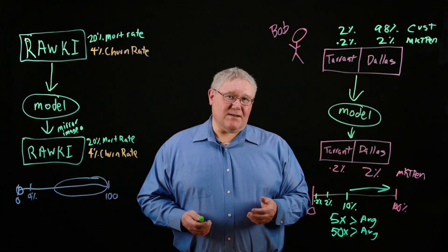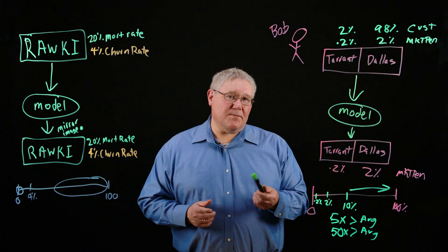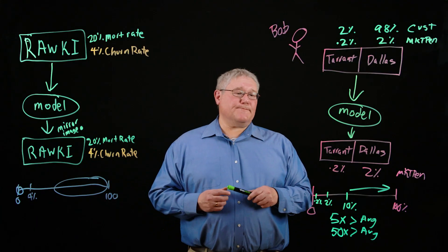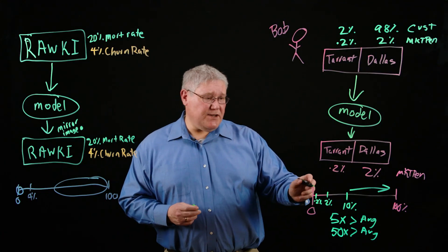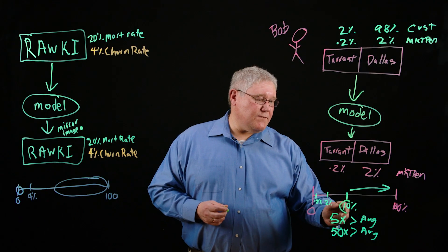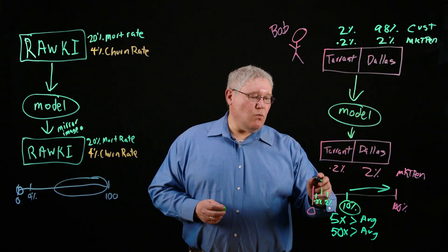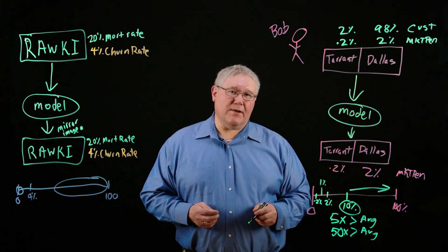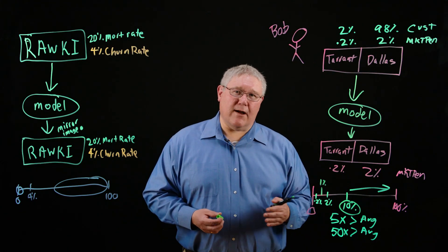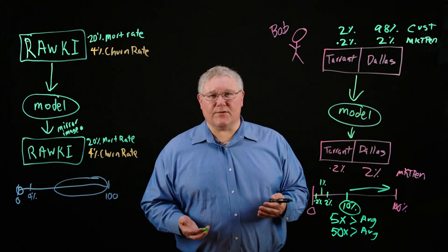So how do you fix this? You can't really fix it per se, but there are some things you can do to mitigate it. One thing you can do is set a different threshold. In this case, Bob may set a threshold of 10% for people in Dallas County, but use 1% for people in Tarrant County, so each group has the same kind of hurdle to climb — that same 5x ratio, since 1 divided by 0.2 equals 5.